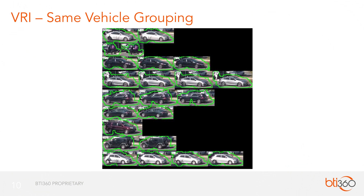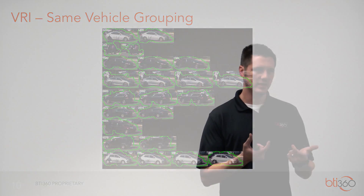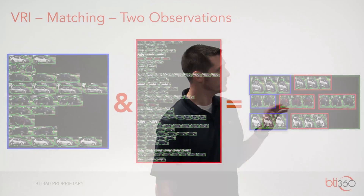We noticed a lot of chips looked like the same vehicle, so we needed to group them. John created an algorithm that looks at which frames each chip was observed in, whether those frames were sequential, and what the vehicle's position was within the frame. Stitching all that together, we can say these are likely the same vehicle. Applying that algorithm, we were able to discretely identify nine vehicles from this one observation.